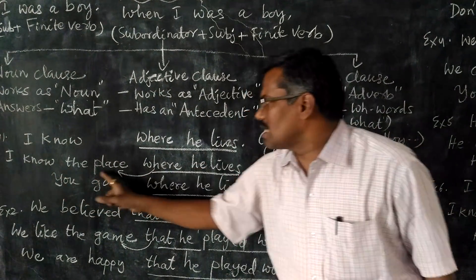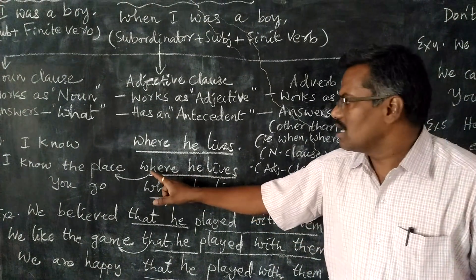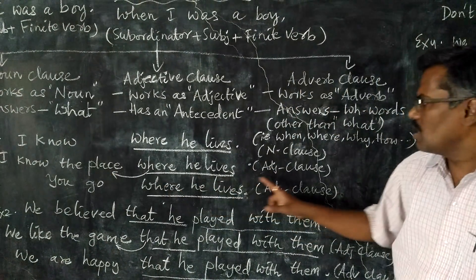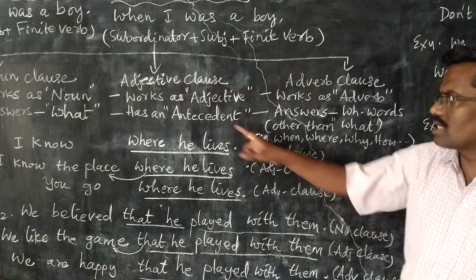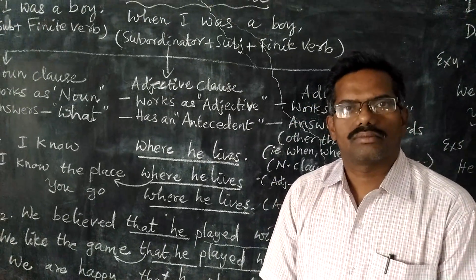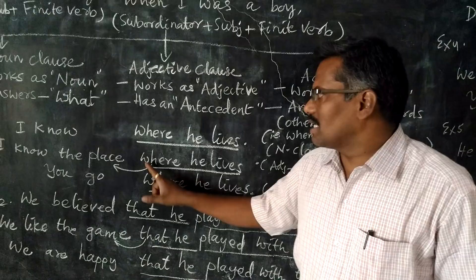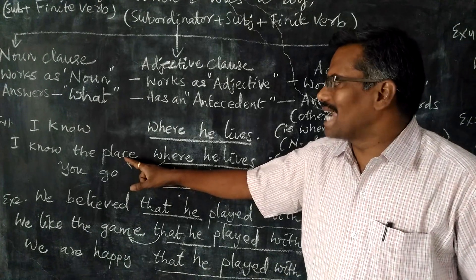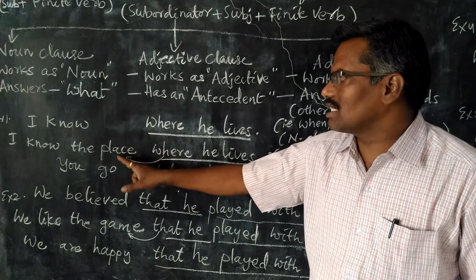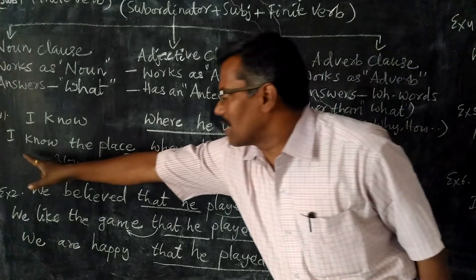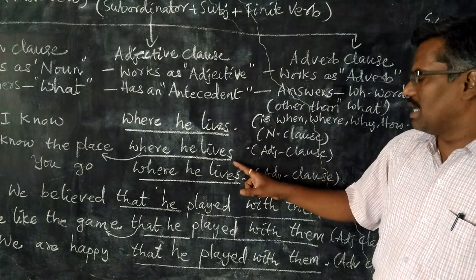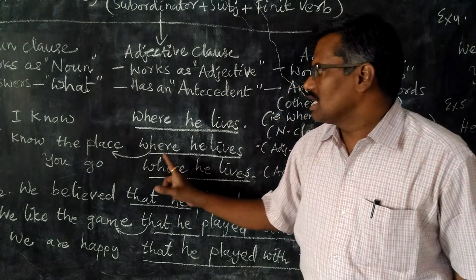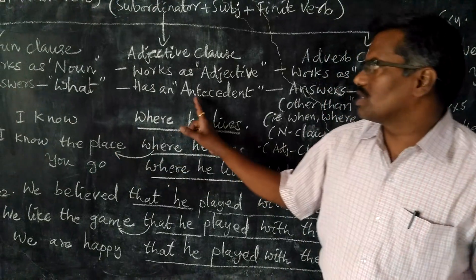Second: 'I know the place where he lives.' Here, 'where he lives' describes the antecedent, that is 'place.' So it is an adjective clause — second rule. The difference between these two sentences is only the existence of an antecedent. In the first sentence, there is no antecedent. In the second, the antecedent is there. So 'I know the place where he lives' is an adjective clause because it has an antecedent which the clause describes.